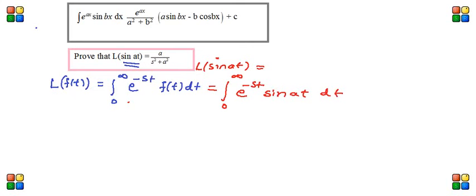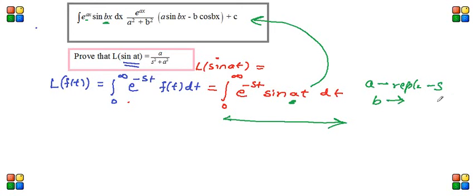So in this integral, if we compare this with the standard integration, then we know that here A is replaced by minus S, and B is replaced by A. And function Dx, that is x is replaced by T.